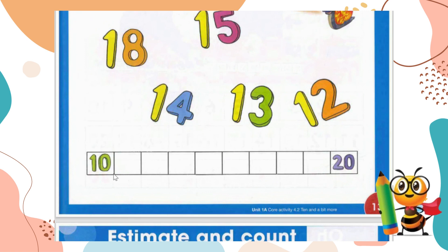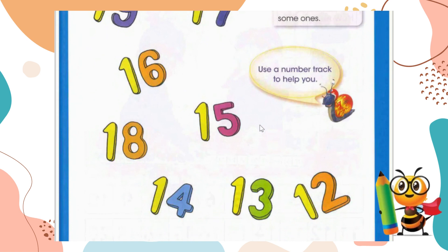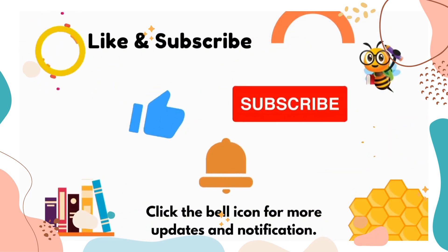There are nine teen numbers, from 11 to 19. Teen numbers come after 10 and end before 20. All numbers made of 10 and some ones are known as teen numbers. I hope you enjoyed this video — please like and subscribe, and we will meet in the next video. Thank you!